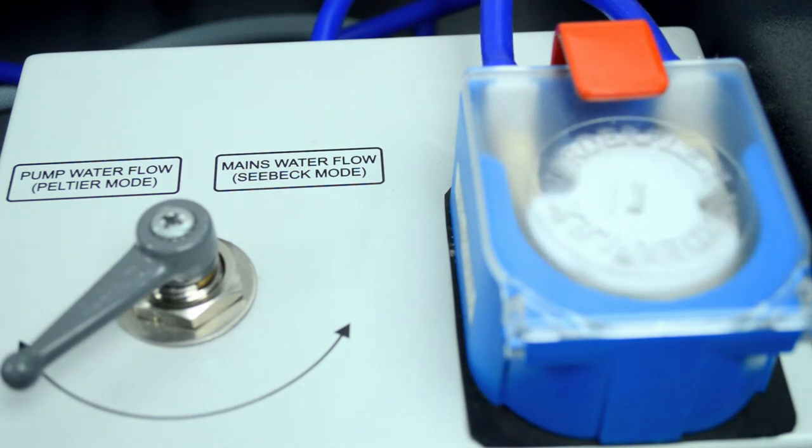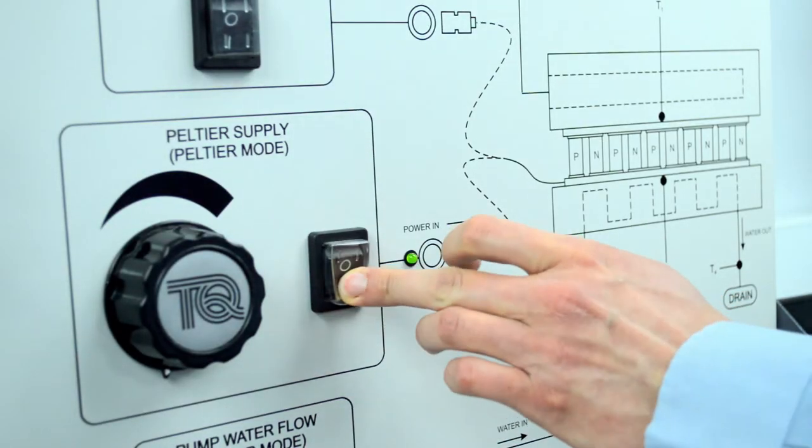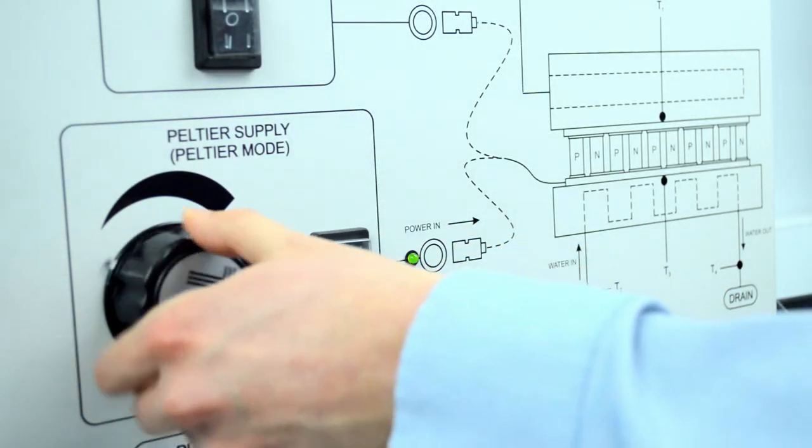A calibrated vessel allows students to measure the fixed water flow. A variable voltage supply controls the electrical power to the device.